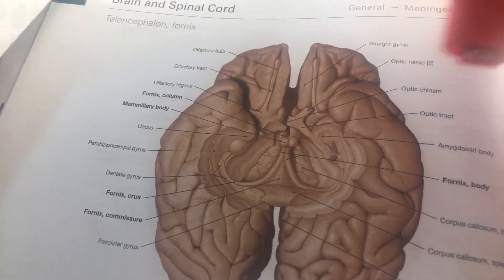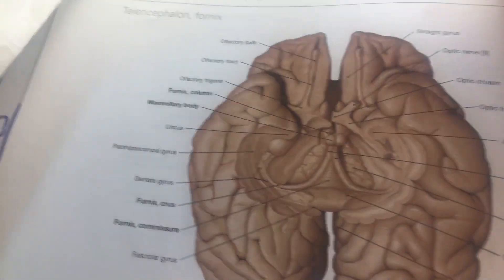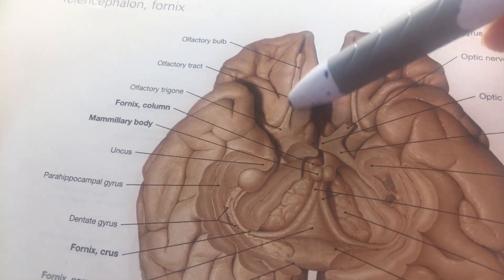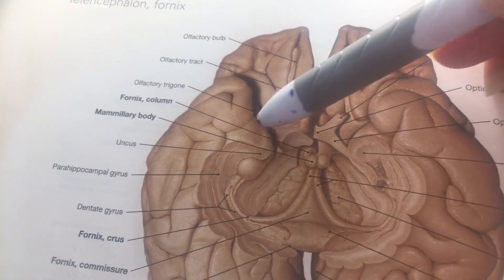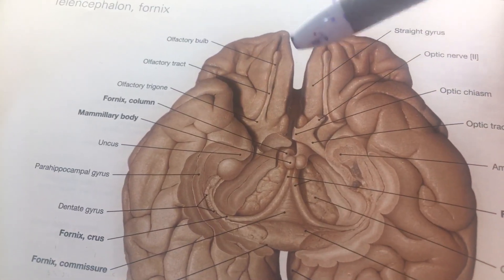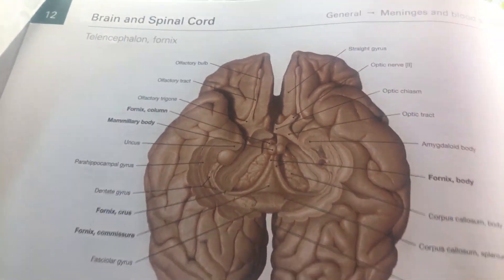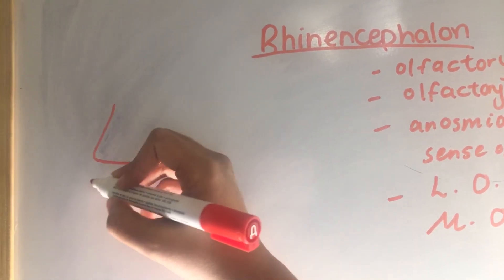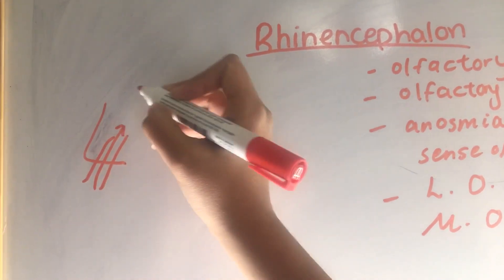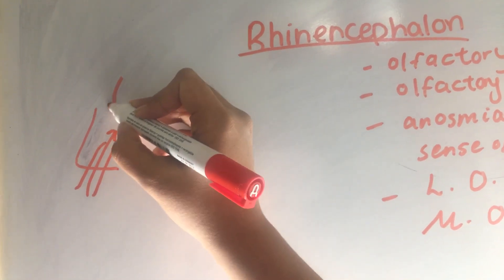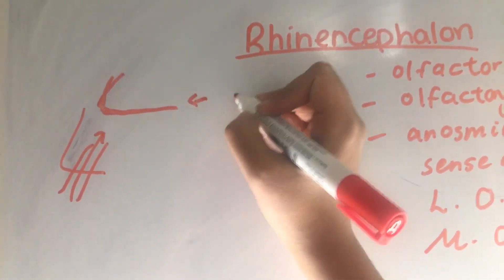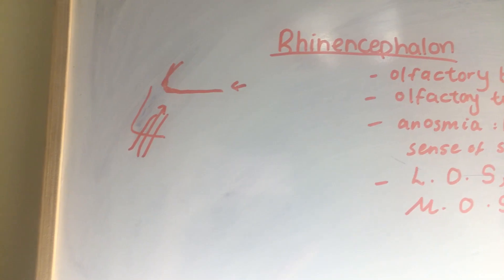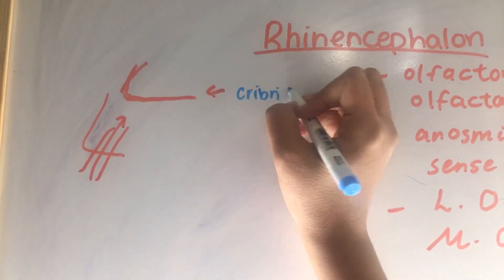It would be easiest to show you diagrams. Here you can see the olfactory bulb and how it goes posteriorly into the olfactory tract, which then goes into the lateral olfactory stria towards the temporal lobe, and the medial olfactory stria. If you put this simply, here would be your nasal cavity, and as the smell travels up, at some point you would have the cribriform plate of the ethmoid bone.